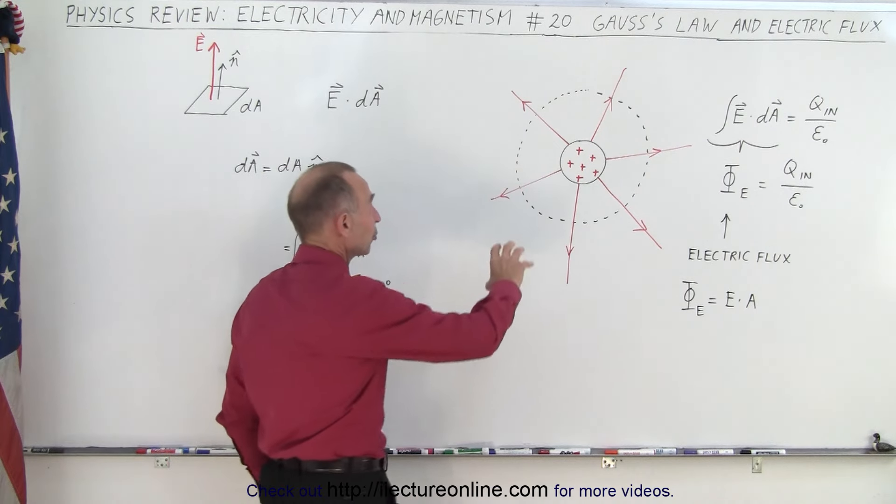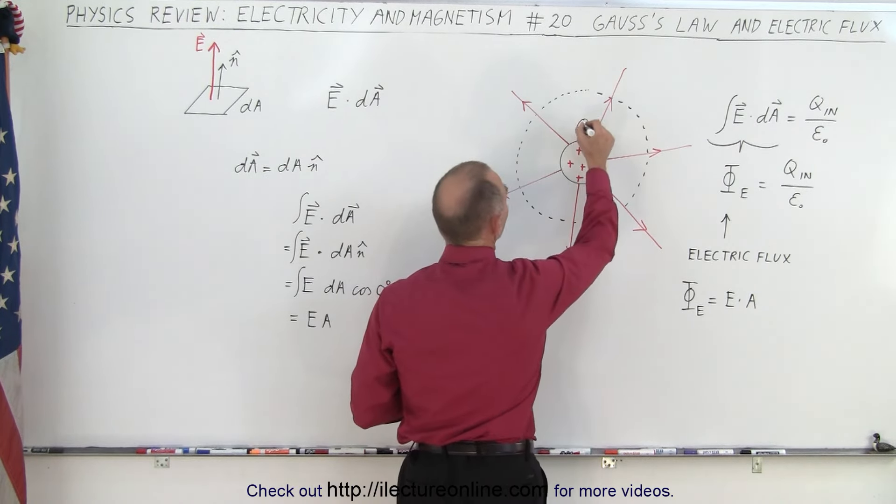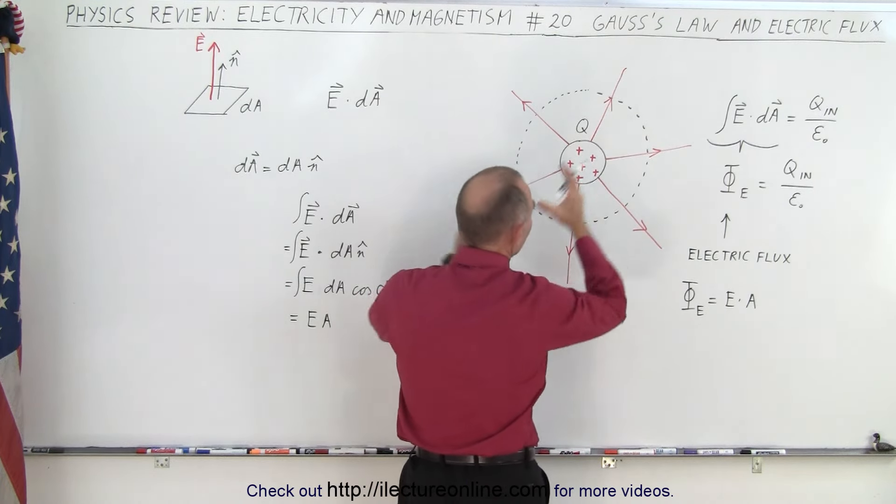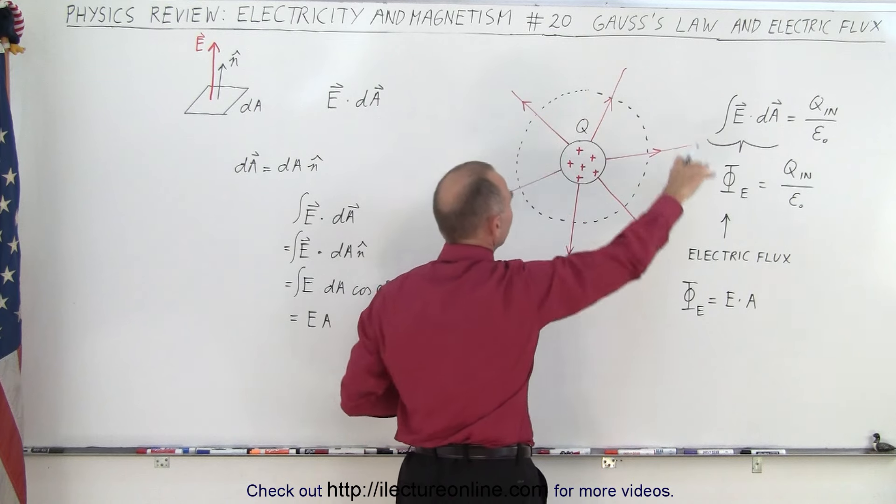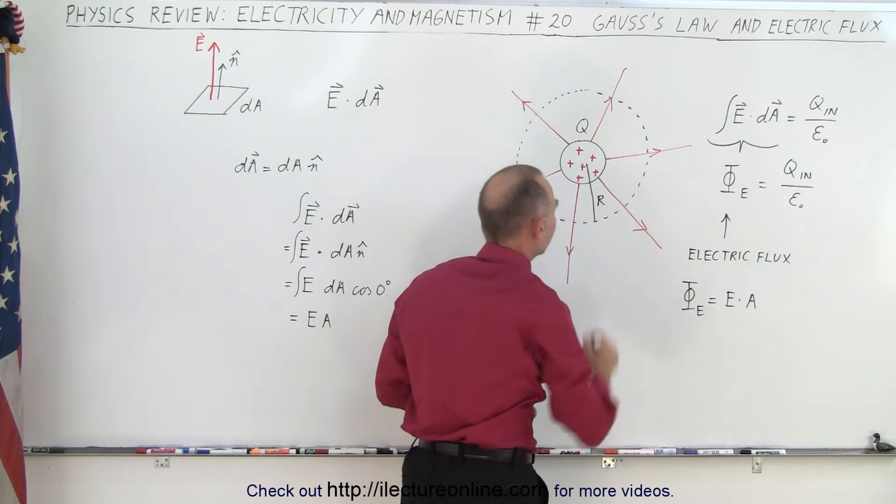Let's say we have some charge right here, let's call it Q, and we have electric field emanating away from the charge. Let's say we draw a Gaussian surface at a distance r away from the center of that charge.